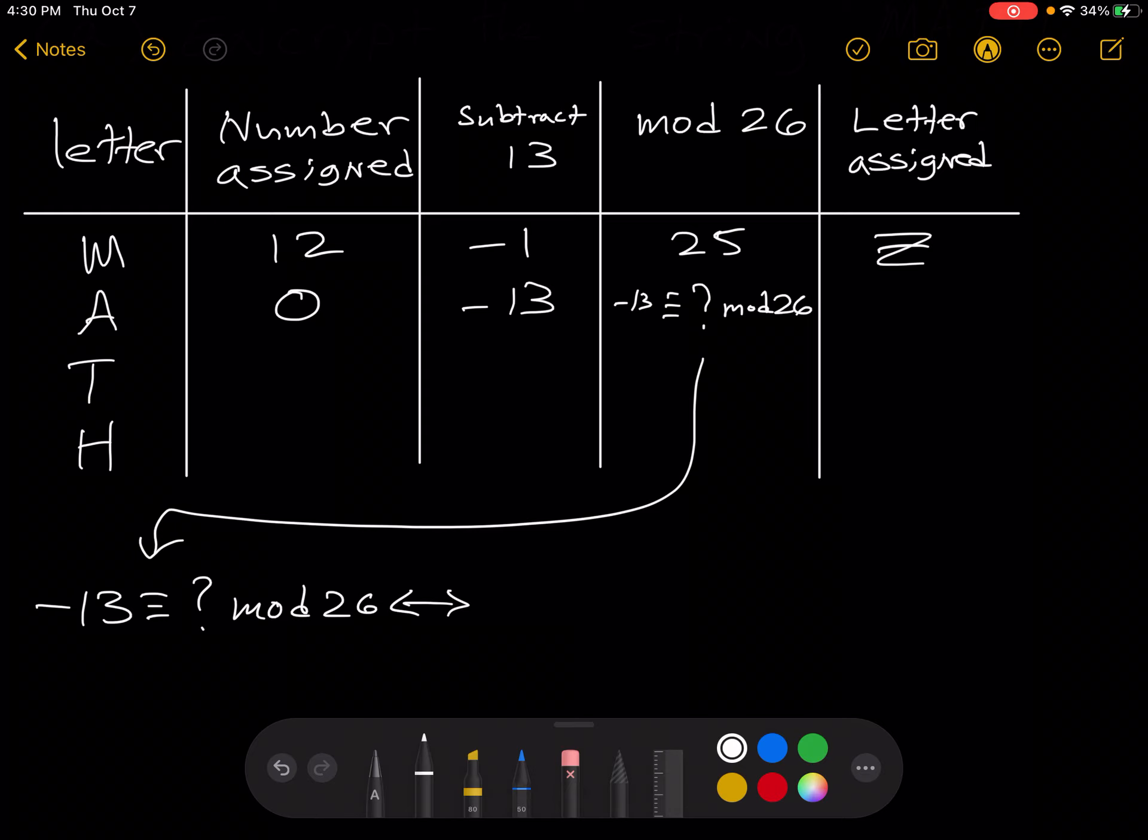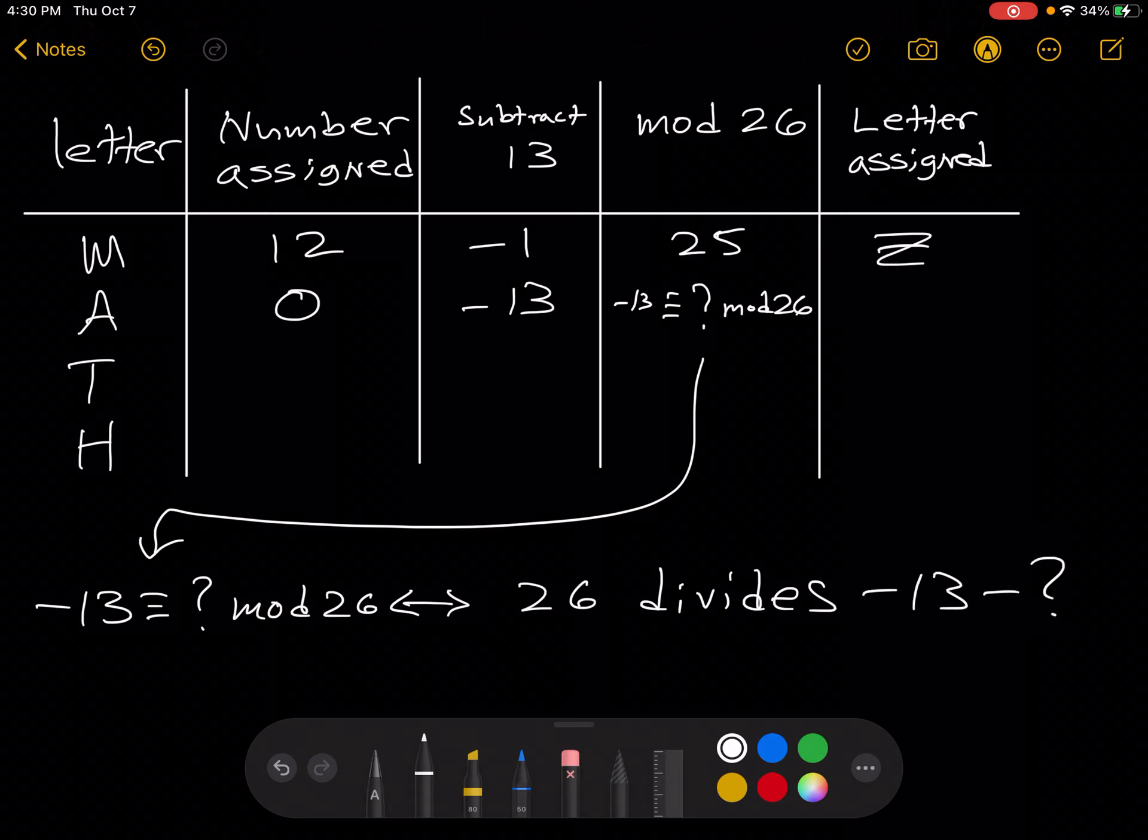Remember that negative 13 congruent to something mod 26 means that 26 divides negative 13 minus something. So we see that that something is 13. Because negative 13 minus 13 is negative 26, and 26 divides negative 26 evenly.